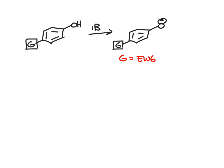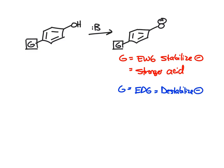We know electron-withdrawing groups stabilize the negative charge. Electron-withdrawing groups attached to the ring will make for a stronger acid. If the group is an electron-donating group, that's going to destabilize the negative charge, which will make it a weaker acid. Let's look at a few examples of different groups on the ring.